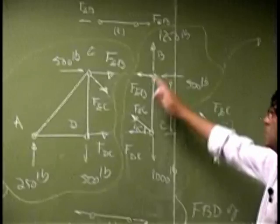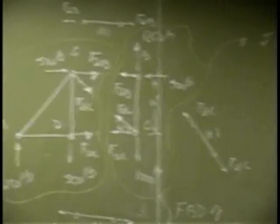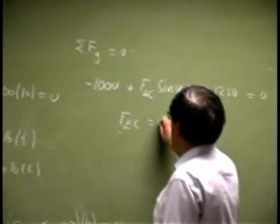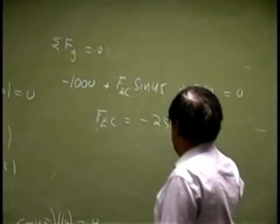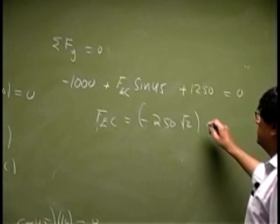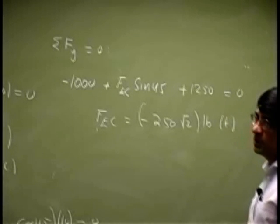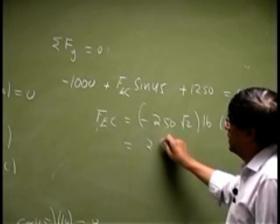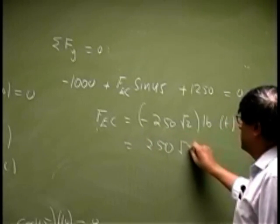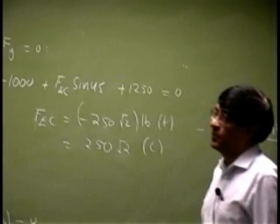We have this component of this and this. So that gives us FEC as negative 250 pounds for root 2. The assumption was in tension, so it will be 250 root 2 and let's take that in compression.